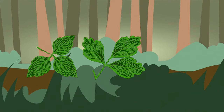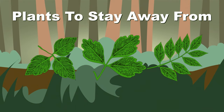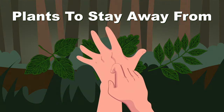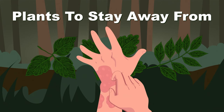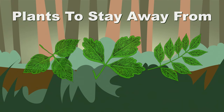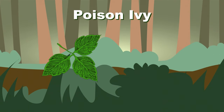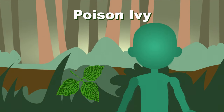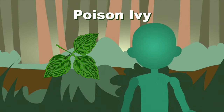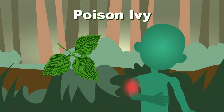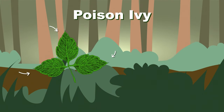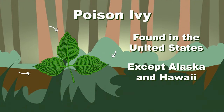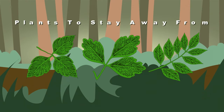These are the top three plants to stay away from. Some of these plants can make you itch with a rash that can develop because they are toxic. This woody vine is called poison ivy — it has vines, roots, leaves, flowers, and berries. If you came into contact with any part of poison ivy, it causes a rash that turns extremely itchy. Poison ivy has three broad, tear-shaped leaves, found in the United States except for Alaska and Hawaii.